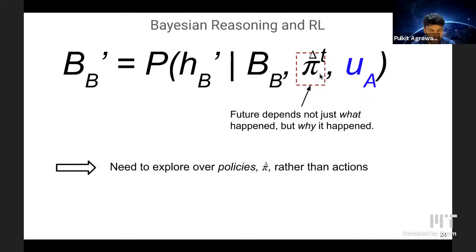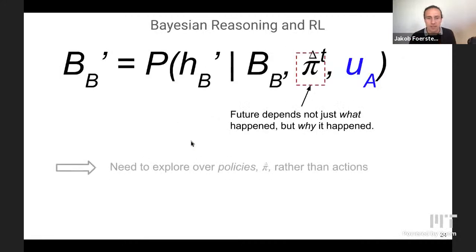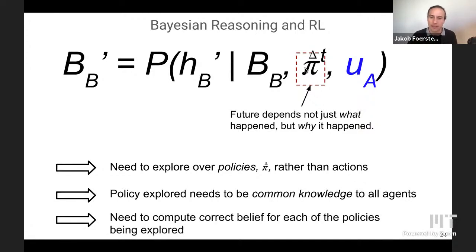For simplicity, the policy maps from Bob's hand to Alice's actions — it only looks at the private observation and produces an action. This means we need different mappings depending on the common knowledge state we're in right now. There are a few consequences: we have to explore over these policies, and the policy being explored has to be common knowledge to all agents in the environment — because if you don't know what policy was used to map from private observations to actions, you can't compute the Bayesian posterior.